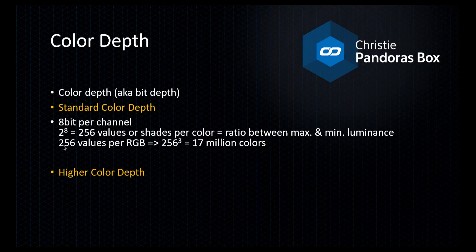We have 256 values for each color channel, and as we have three channels — red, green, and blue — we can multiply 256 three times to receive 17 million colors. This might sound like a lot, however the human eye can actually perceive much more, and this is the reason why higher color depth is such an important step towards better image quality.